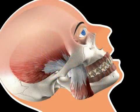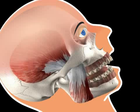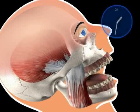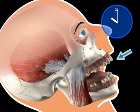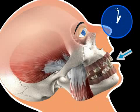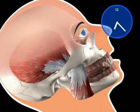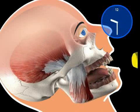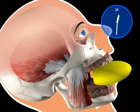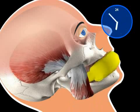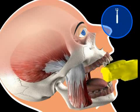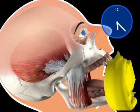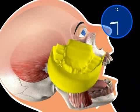In individuals with a full set of teeth, the position of the jaws is determined by the dentition. In persons without any teeth, or with very few teeth, the dental technician needs information about how the jaws relate to one another in order to be able to correctly prepare the dental prosthesis.